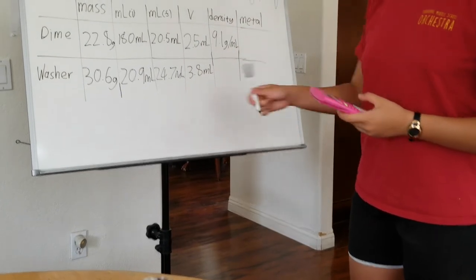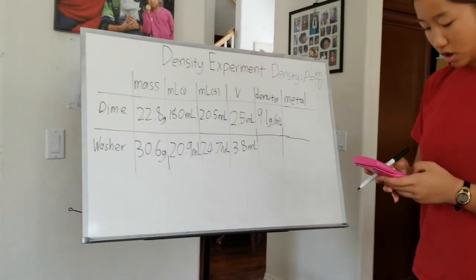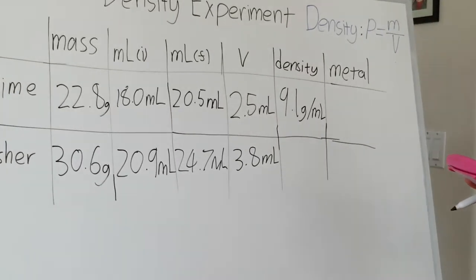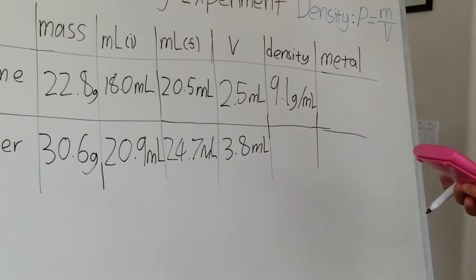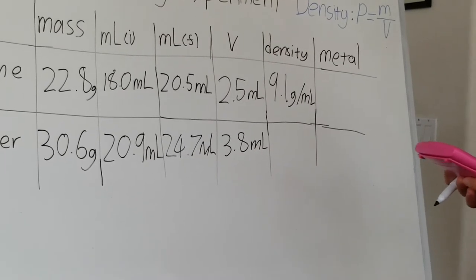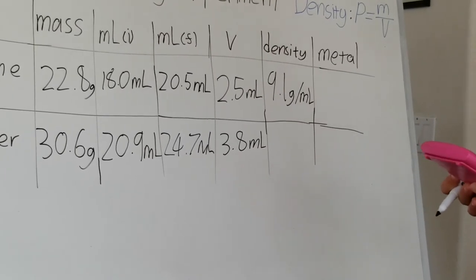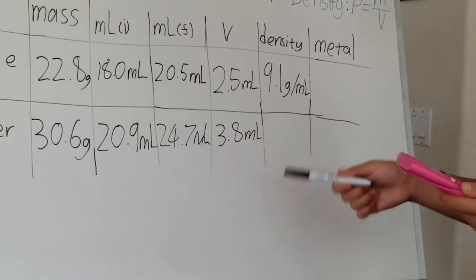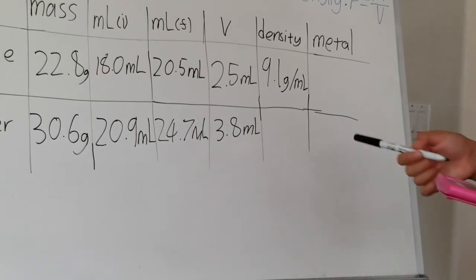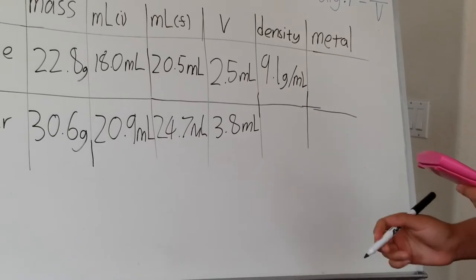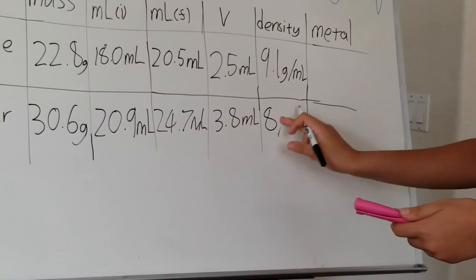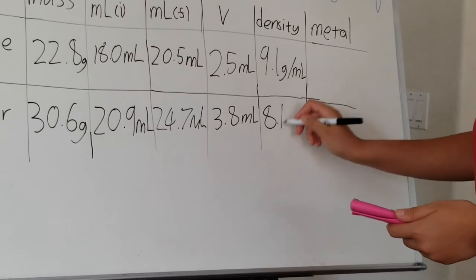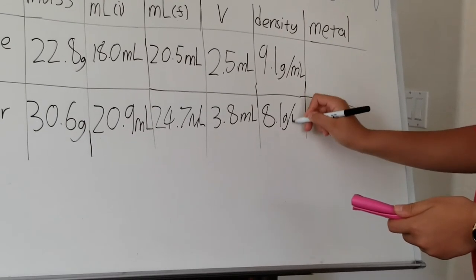Okay, so for the next one, which are the washers, you would do 30.6 grams divided by 3.8 milliliters. You would get 8.052. But once again, only two significant figures. So 8.1 grams per milliliter.